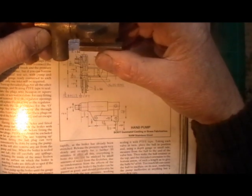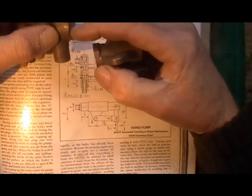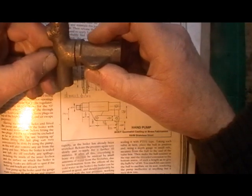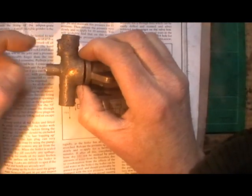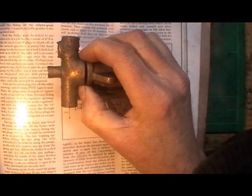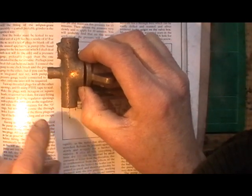It's a two-part body and it'll fit together on a spigot here when I've machined it and be silver soldered together like that. Coming out of this top, a little outlet to boiler, and coming into bottom here, a little inlet from water tank.